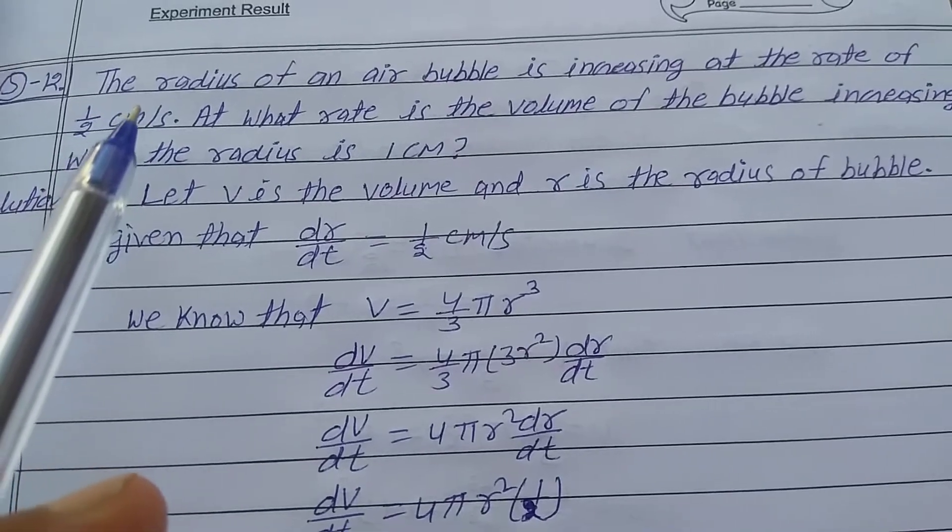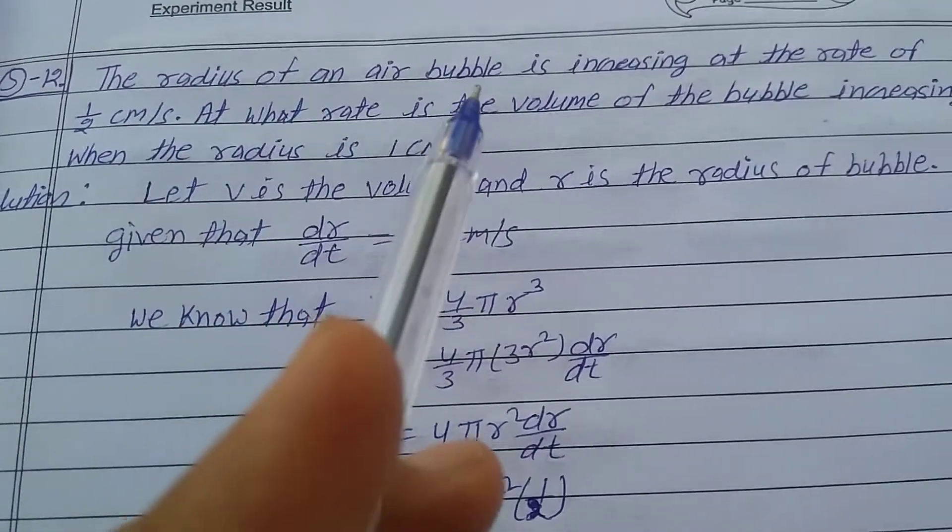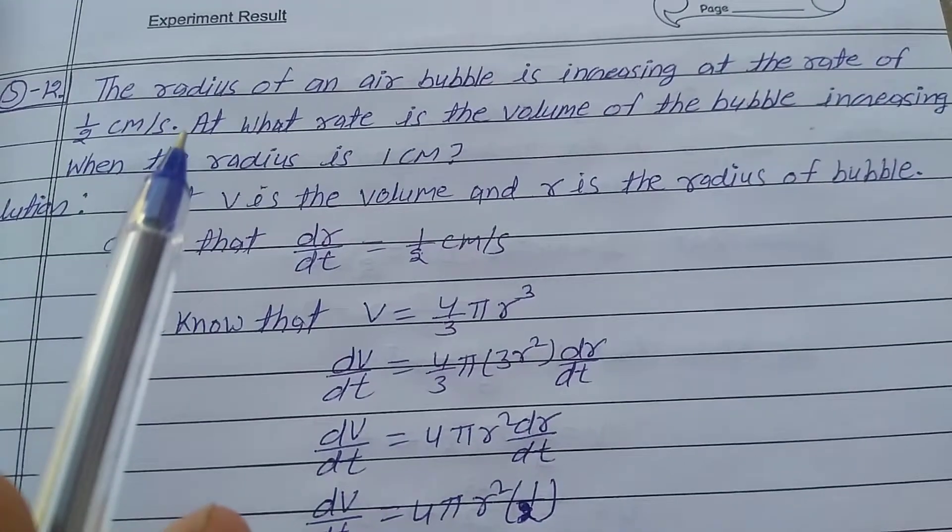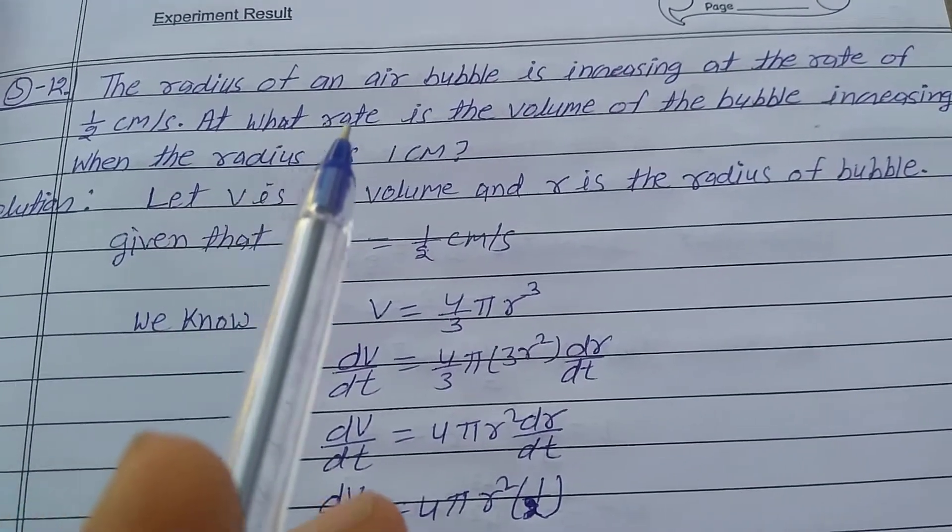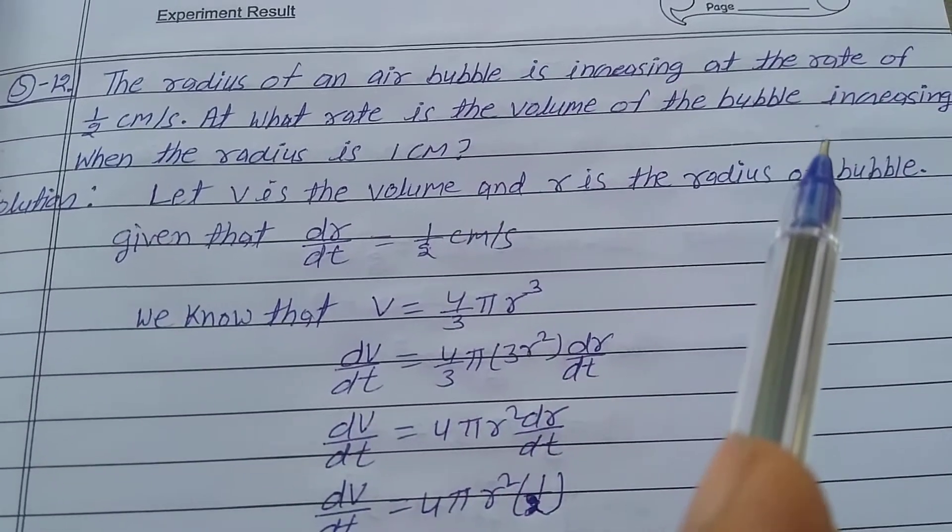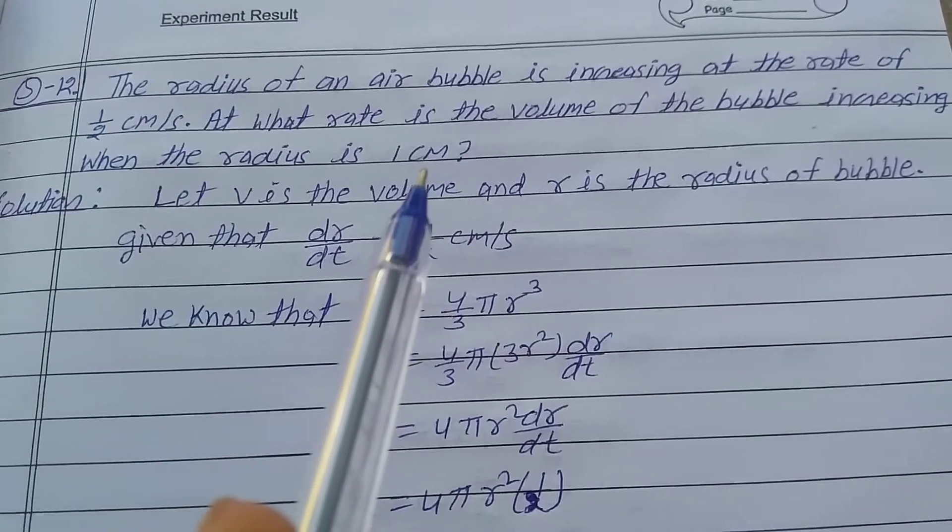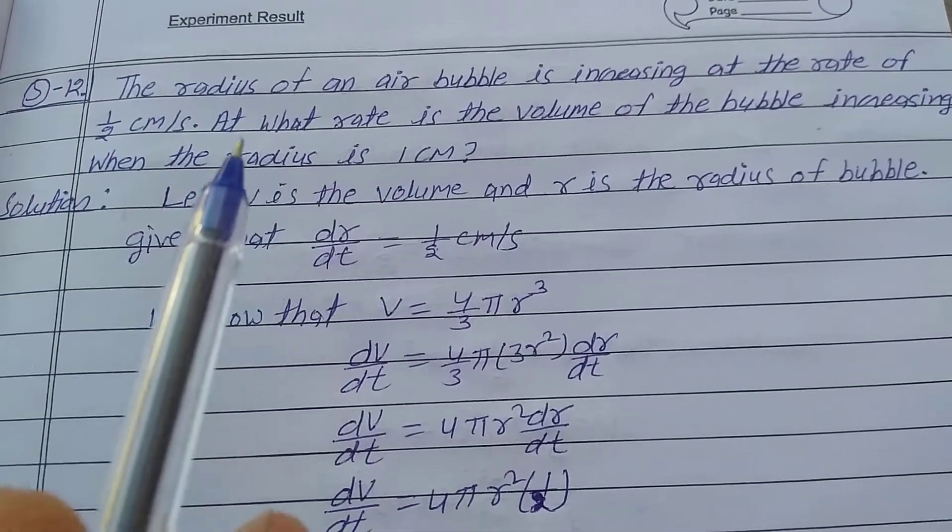Question number 2, Exercise 6.1, Class 12. The radius of an air bubble is increasing at the rate of 1/2 centimeter per second. At what rate is the volume of the bubble increasing when the radius is 1 centimeter?